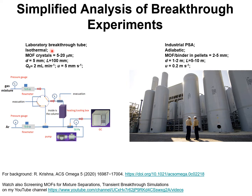Typically, the laboratory experiments are conducted in breakthrough tubes under isothermal conditions, and the tubes are packed with MOF crystals of about 5 to 10 micrometers in crystal size. The inside diameter of the tube is of the order of 5 millimeters, and the length of the packed tube is about 100 millimeters. The volumetric flow rates of the gas mixture entering the breakthrough tube are of the order of 2 milliliters per minute, resulting in a superficial velocity of 5 millimeters per second.